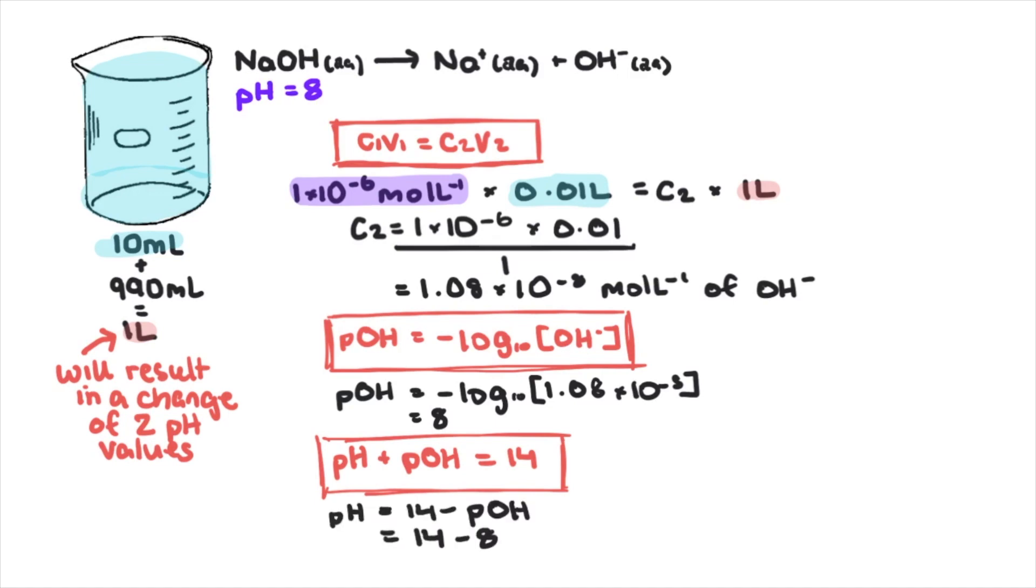So in this example, the pH moves towards neutral by two values. And it makes sense—adding more water to a basic solution will reduce the hydroxide ion concentration, so it should become more neutral or less basic.